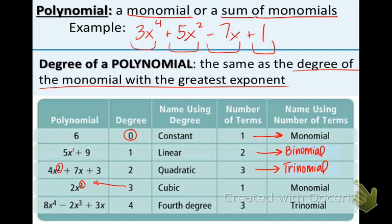Last row, 8x to the fourth minus 2x to the third plus 3x. There are, let's see, degree 4 because the biggest exponent is 4. And there are three terms, so this is called a trinomial.